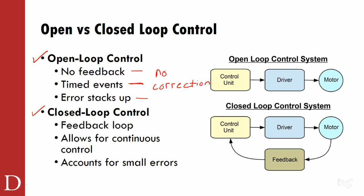Closed loop control by contrast is a feedback loop. The control unit says it wants the motor to go at a certain speed. The motor then sends feedback saying it's been commanded to go 100 RPMs but is actually going 90 RPMs. The control unit can then say, let's add 10 RPMs — instead of telling it to go 100, we tell it to go 110 and now we're actually going 100. With open loop, if we told it to go 100 and it was only going 90, we'd have no way of knowing. The feedback mechanism in closed loop could be a tachometer measuring RPMs, a temperature sensor measuring house temperature, or a photoelectric sensor measuring outside light. That is a feedback control loop.